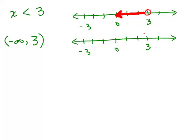For the matching interval notation graph: instead of a circle, it's going to be a parenthesis opening the same way at 3, and we're going to the left forever. So there's the interval notation way of writing the inequality and the graph.